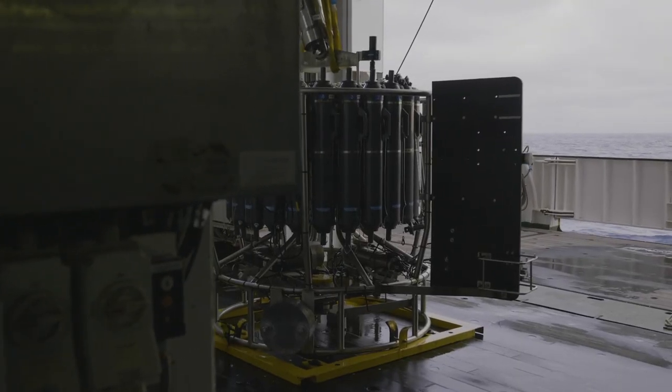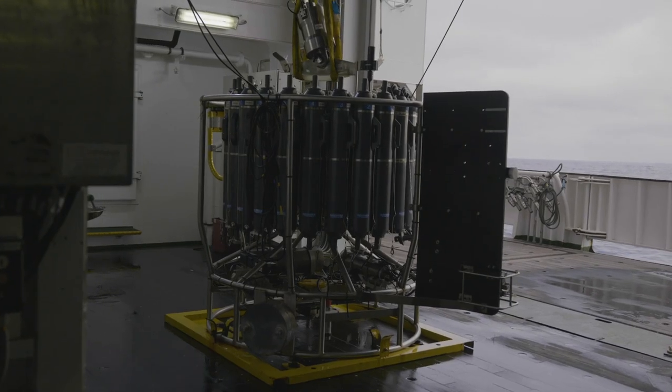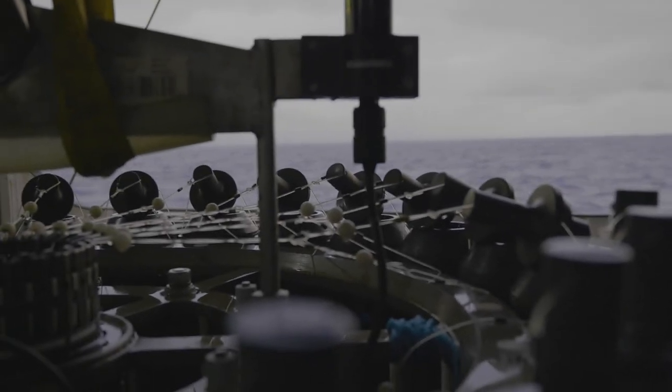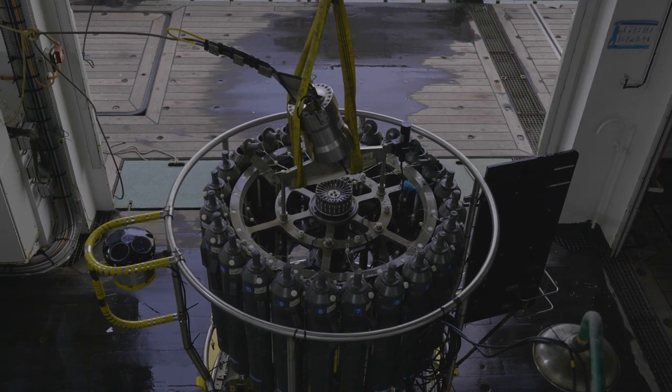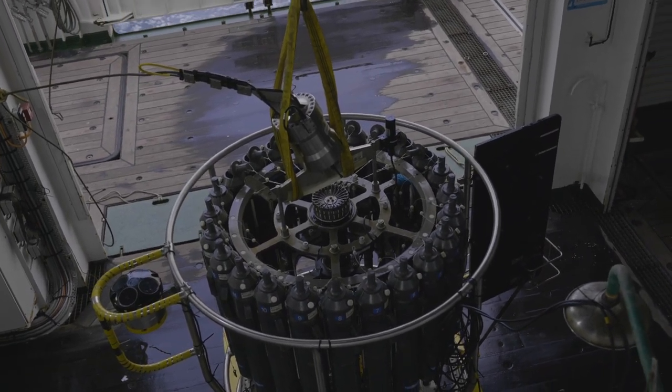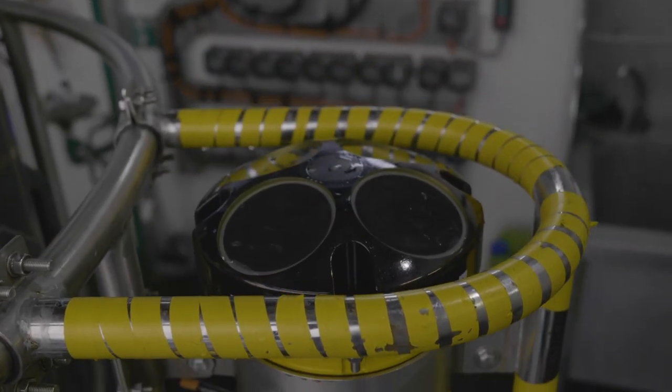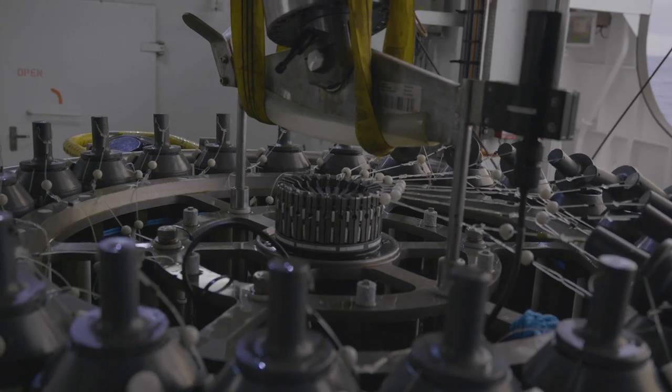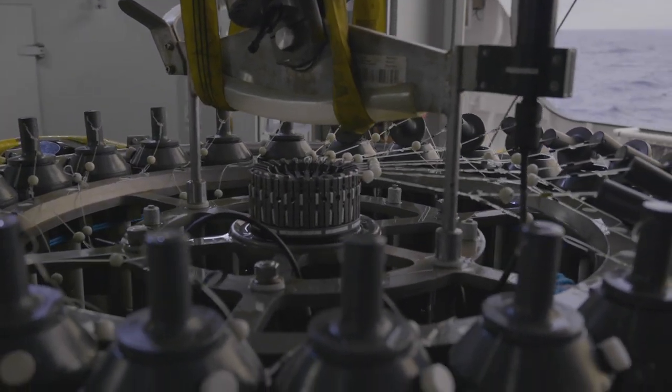But how do we make these observations? We use an instrument known as a CTD, lowered over the side of the ship by a winch to measure ocean properties including temperature, conductivity or salinity, dissolved oxygen, and pressure. It is mounted on a frame known as a rosette for the ring of bottles used to collect samples of seawater from different depths.